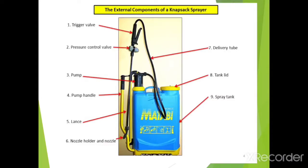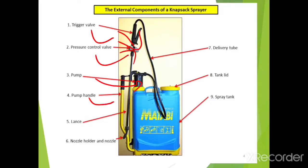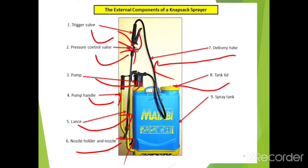The different components of the knapsack sprayer: first is a trigger valve to operate and control the flow of the spraying liquid. Then there is a pressure control valve, then the pump, then the pump handle. Then there is a lance with a nozzle holder and nozzle. Then the delivery tube, lid, and spray tank.